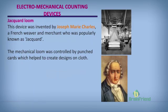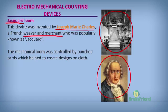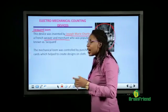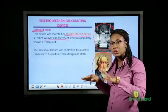Jacquard's loom was invented by Joseph Marie Charles, popularly known as Jacquard, a French weaver. A loom is used in the textile industry. The mechanical loom he made was controlled by punch cards and is used to create designs on clothes.